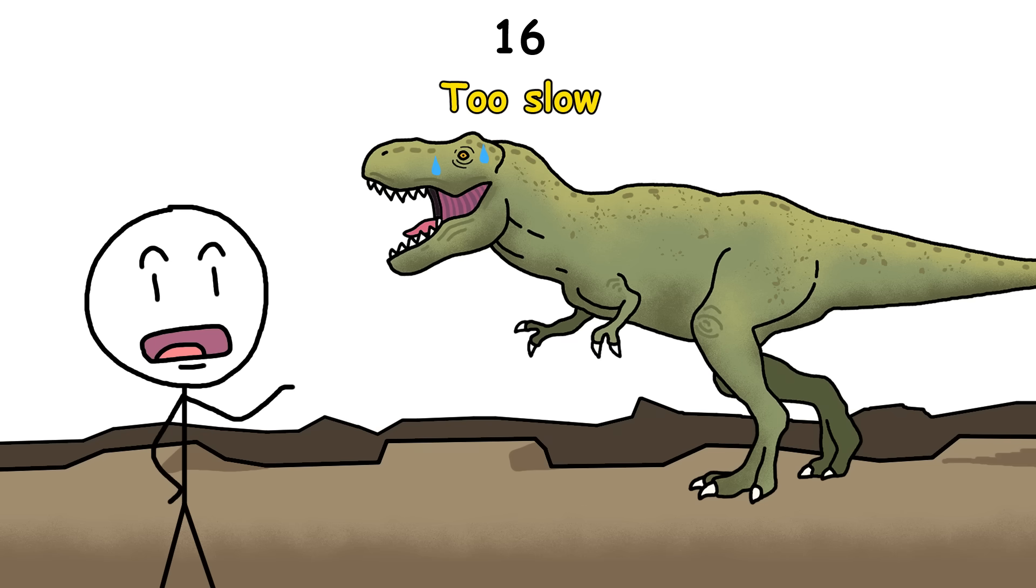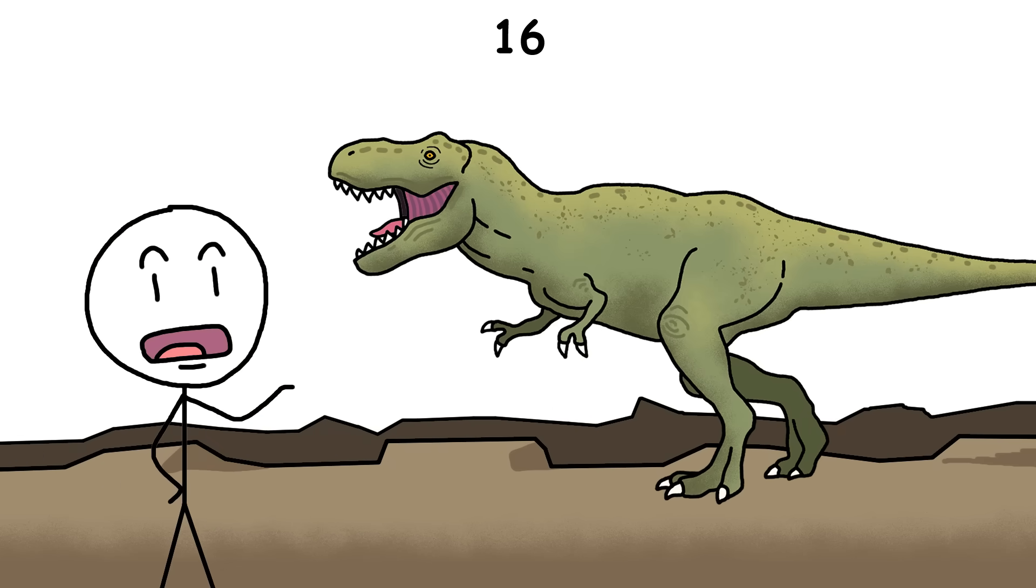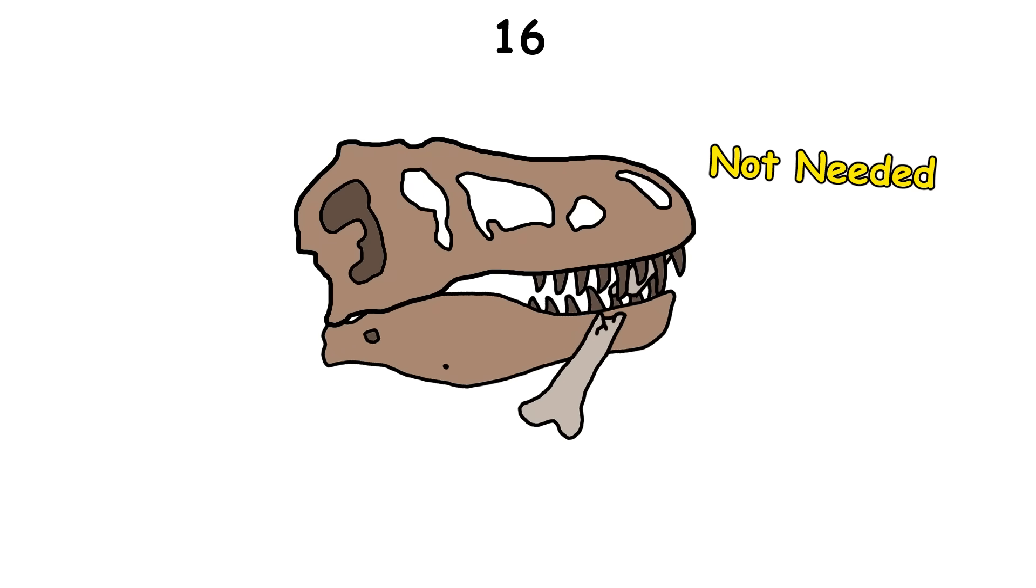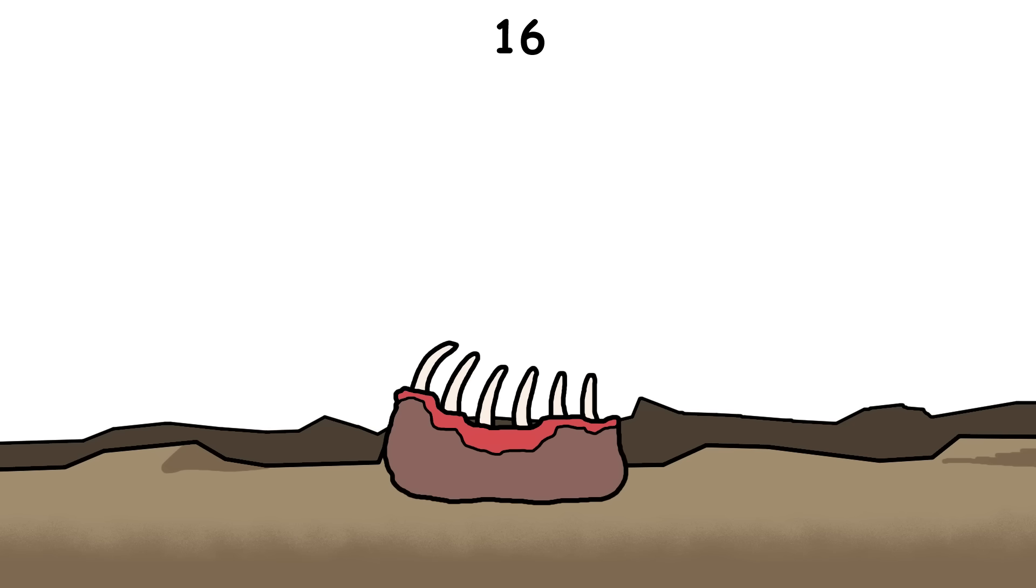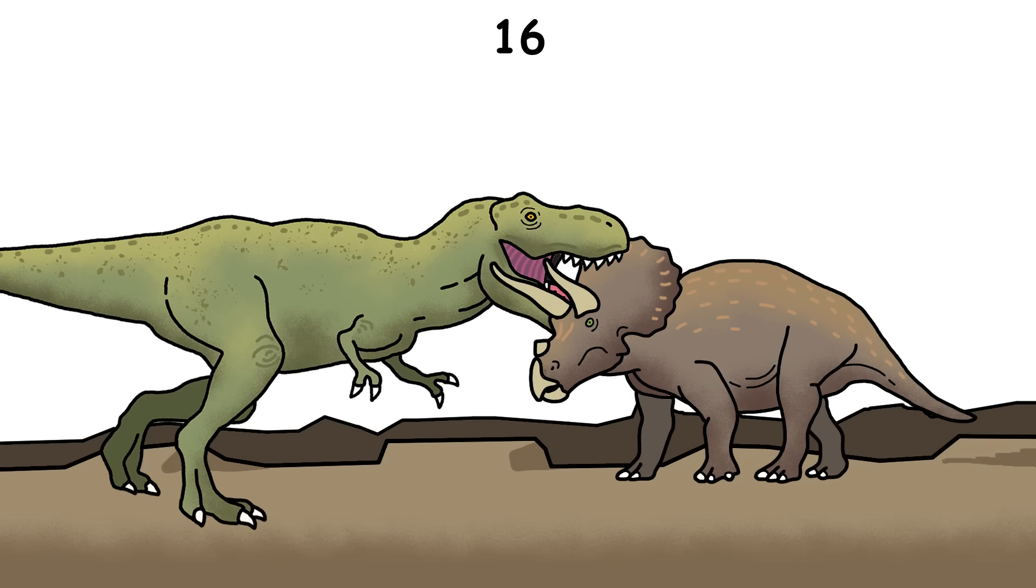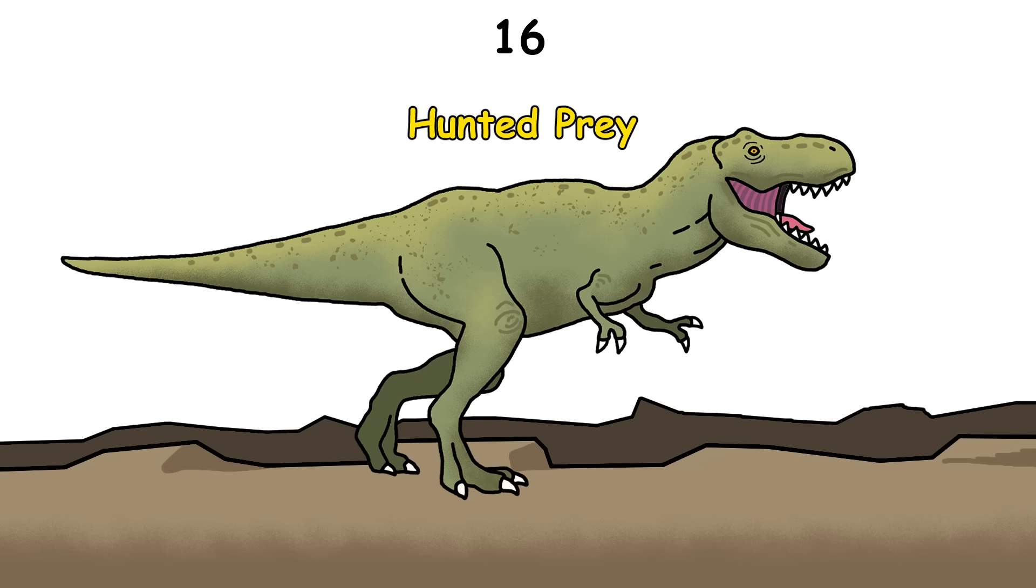Some scientists once suggested that T. rex was too slow to hunt, and that it survived by stealing food from other predators. We now know it was definitely a skilled hunter, since, for example, its bite was strong enough to crush bones, a feature that wouldn't really be needed if it only ate leftovers. Also, scientists have found bones of dinosaurs like Triceratops with healed T. rex bite marks. That means the T. rex attacked them while they were alive, and they survived the attack, proving that it hunted live prey.